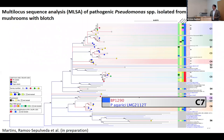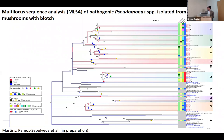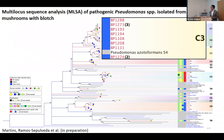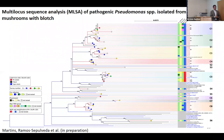We also found another strain that grouped together with another new Pseudomonas pathogen — Pseudomonas agarici — which causes blotch disease. In addition, we found other clades that did not group with anything else. For those organisms, we can go back in the literature, find where those isolates came from, and ask the authors to send us the strains so we can work with them and ask more questions.